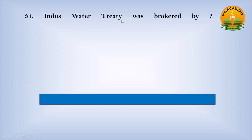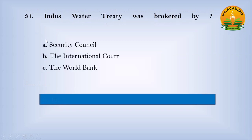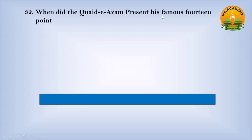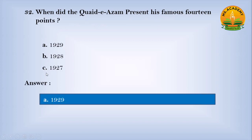The Indus Water Treaty was brokered by: Option A, Security Council; Option B, the International Court; Option C, the World Bank. Answer: C — the World Bank. When did the Quaid-e-Azam present his famous 14 Points? Option A, 1929; Option B, 1928; Option C, 1927. Answer: A — 1929.